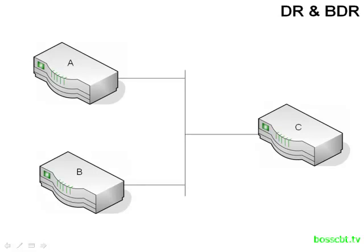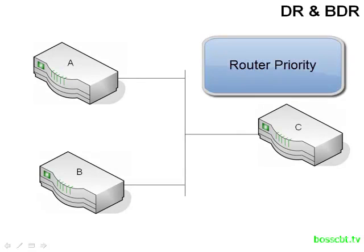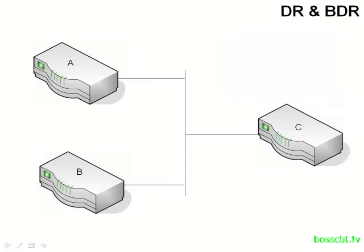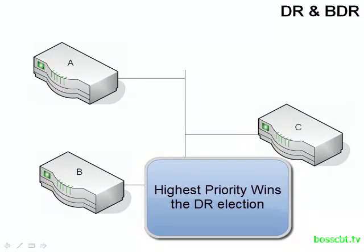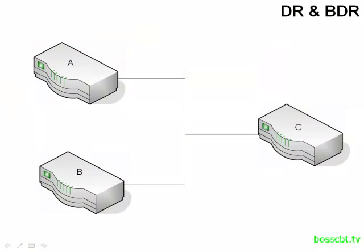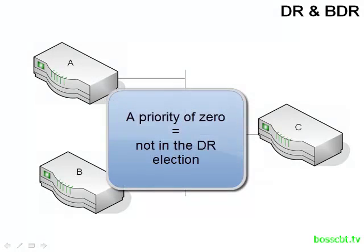The designated router is elected by the other routers, and this election is based on the router priority — one of the fields listed in the hello message. This is a value between 1 and 255 that can be assigned to each router. When all routers compare their router priorities, the one with the highest value wins. If they're tied, they resort to the router ID — that 32-bit OSPF value — to determine which one becomes the designated router. The router with the second highest priority would then become your backup designated router.